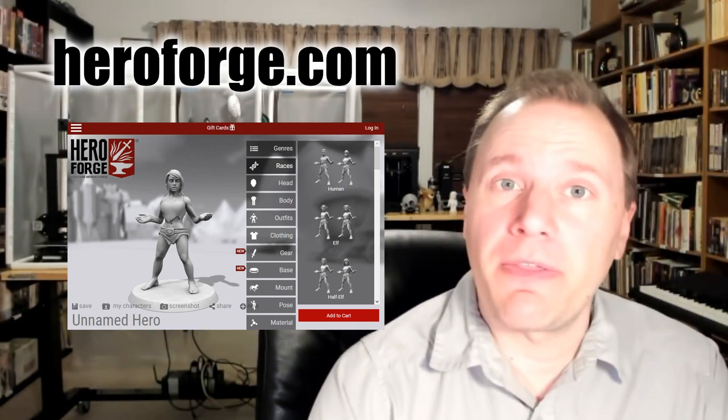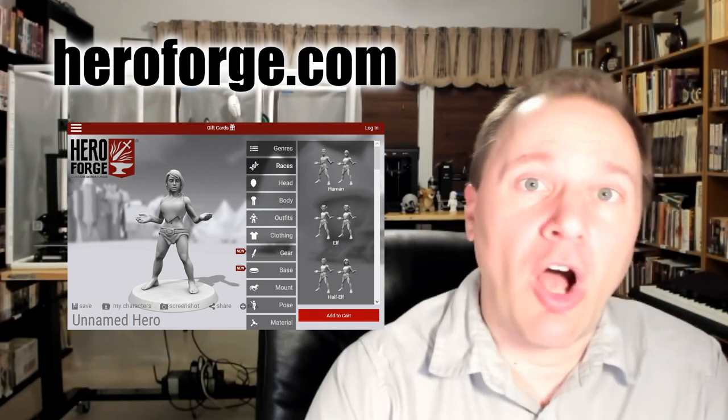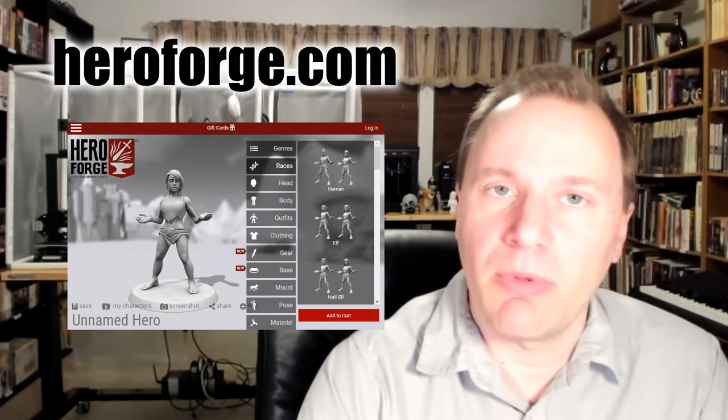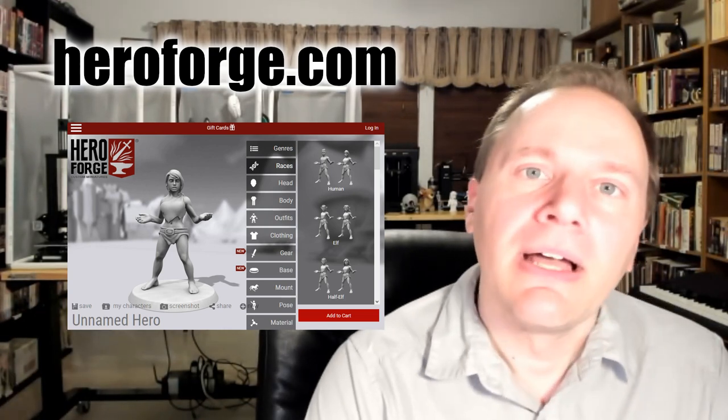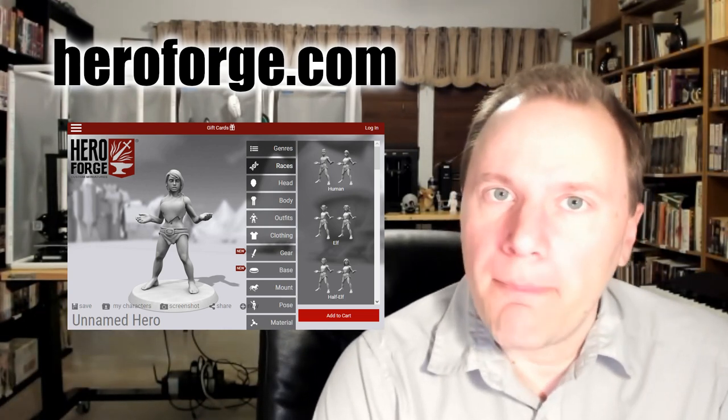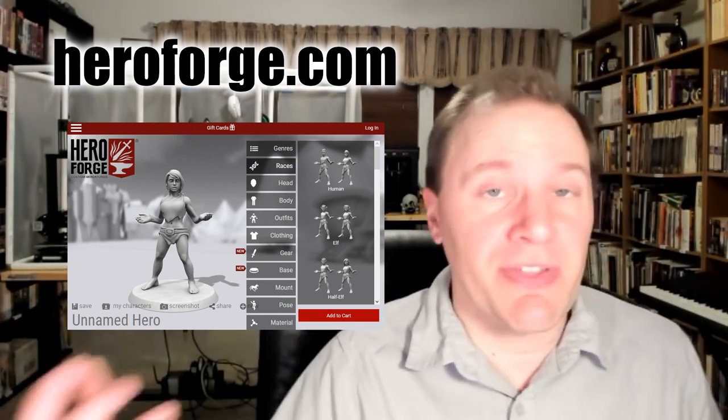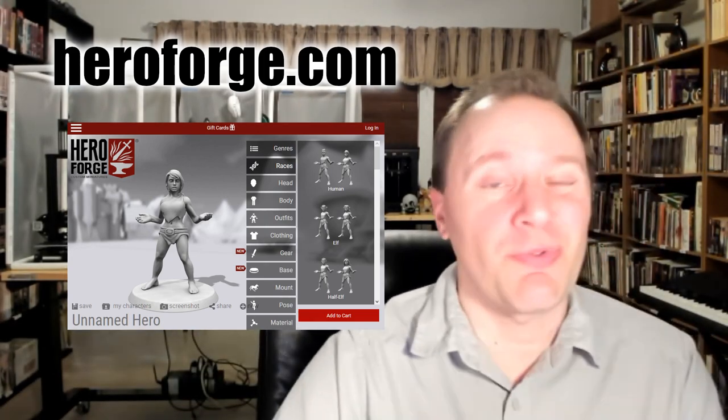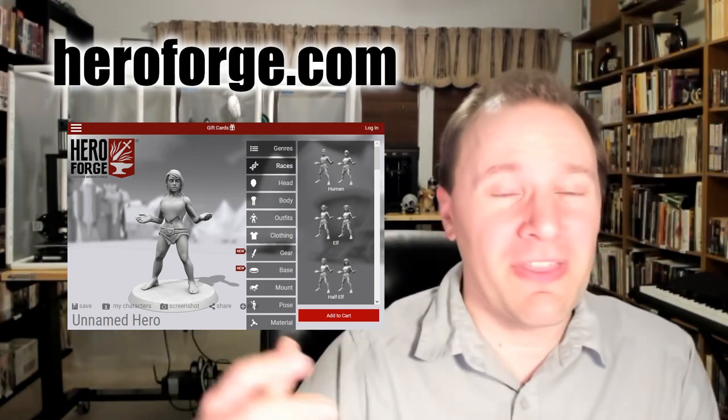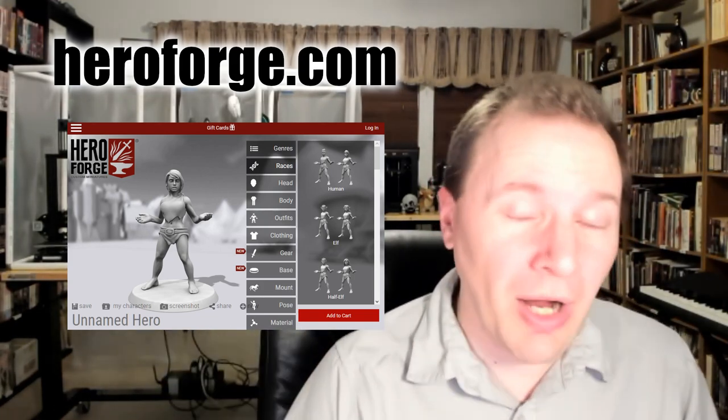A figure with the basic plastic will cost $20. Then they have other materials available for more money than that. They actually use Shapeways on the back end as I understand it. So you are paying a little bit more, but you can customize everything you want. If you go to someplace like Shapeways, you're going to have to find the original file for the kind of character you want. Whereas with Hero Forge, all the options are there.